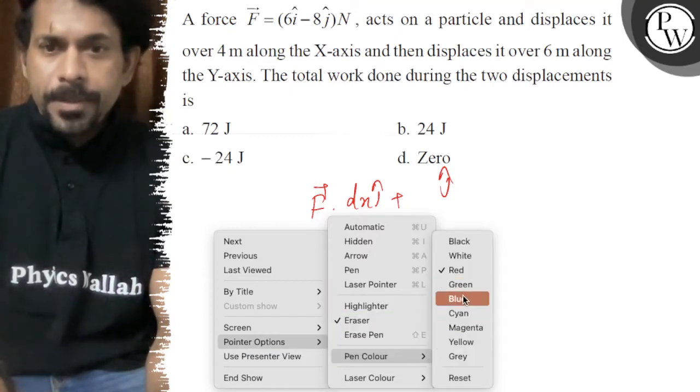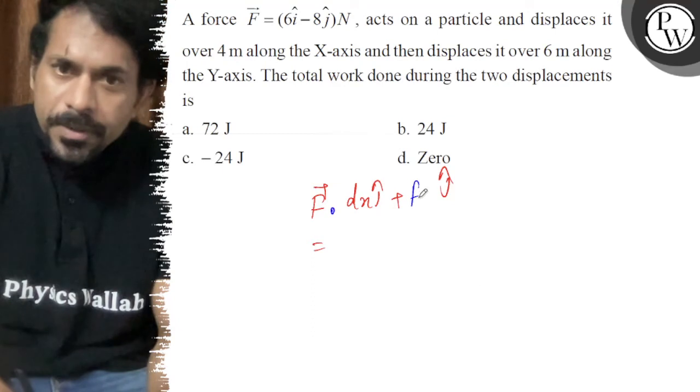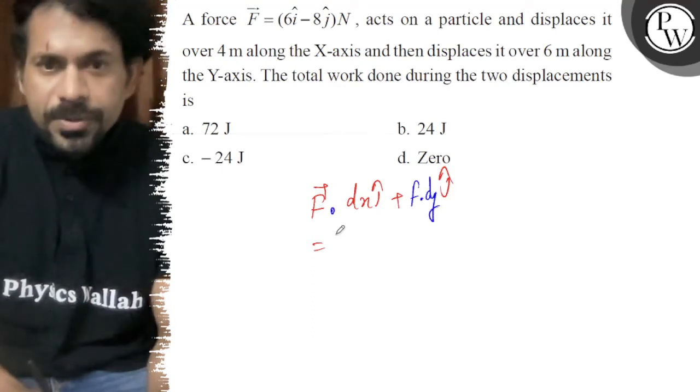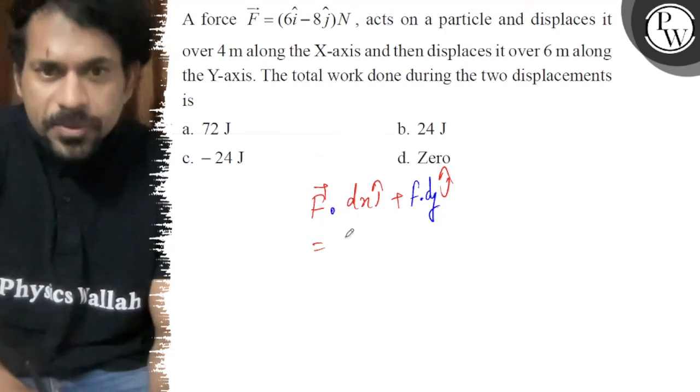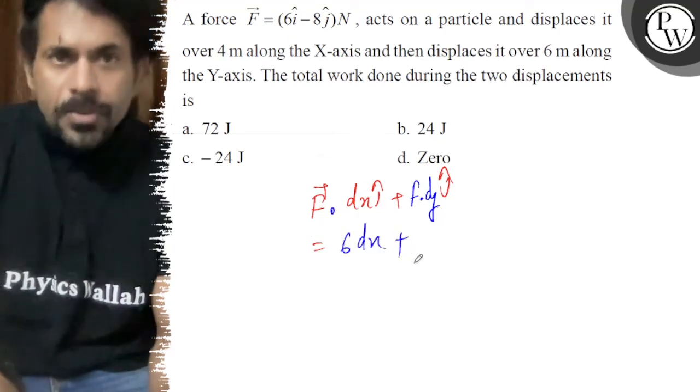So, yeh ho jayega F dot dx aur yeh ho gaya F dot dy. F kitna hai? 6 î cap minus 8 ĵ cap. So from the î component, this becomes 6 dx, and this becomes minus 8 dy.